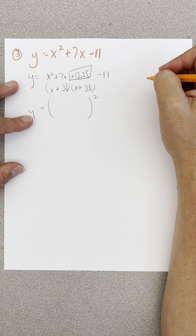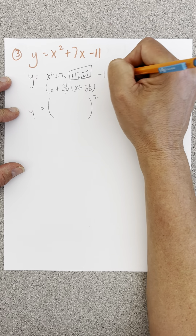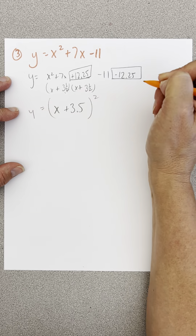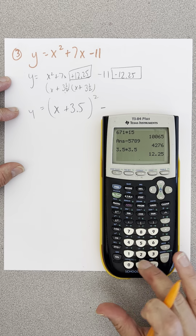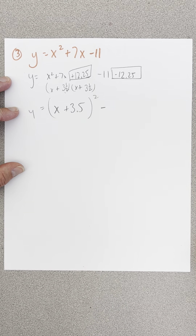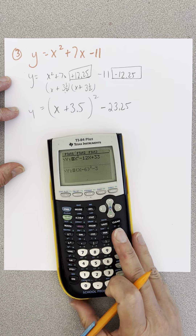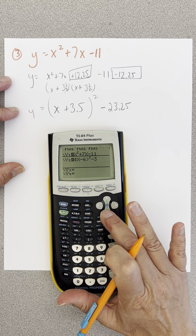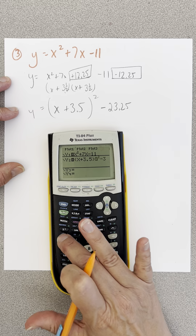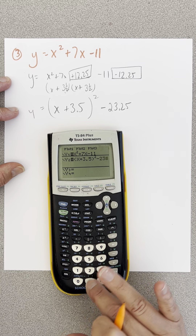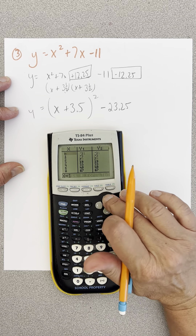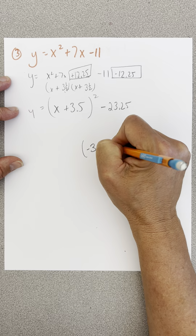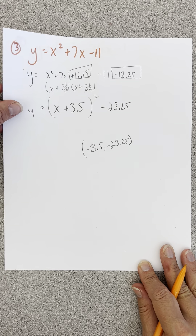If I add 12.25, to balance my equation I either add it over here or subtract it over here — and I subtract it because I want y equals. So y equals the quantity x plus 3.5 squared, then minus — negative 11 minus 12.25 is negative 23.25. Let's check this. x squared plus 7x minus 11 equals x plus 3.5 squared minus 23.25. All the tables are the same — you've got to trust. Vertex: move to the left 3.5, and down 23.25. We can do those with calculators.